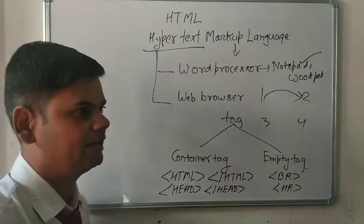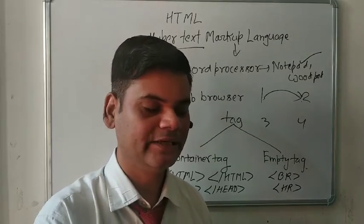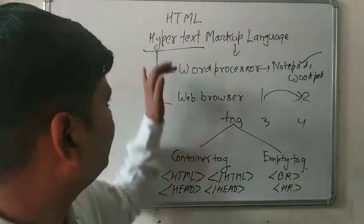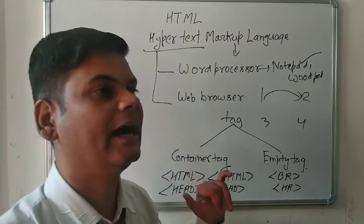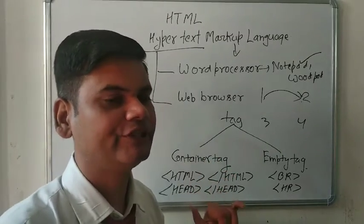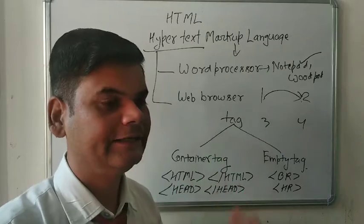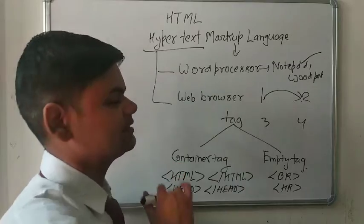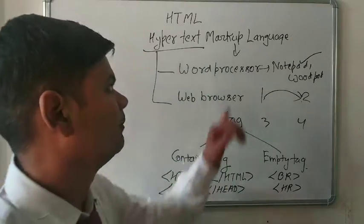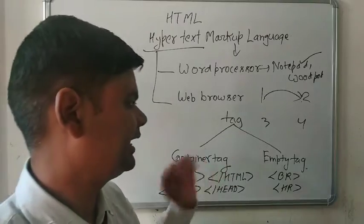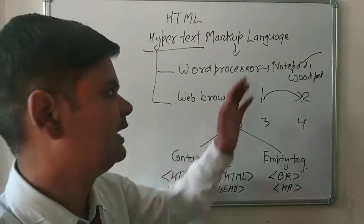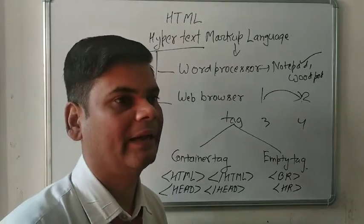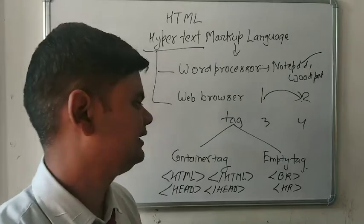So basically HTML is a programming language used for web designing. Its full form is HyperText Markup Language. HyperText means text which contains a hyperlink. A hyperlink is a link used for interconnecting web pages to each other. If any text contains a hyperlink, it is known as HyperText. Markup means if any programming language uses tags, that is known as a markup language.